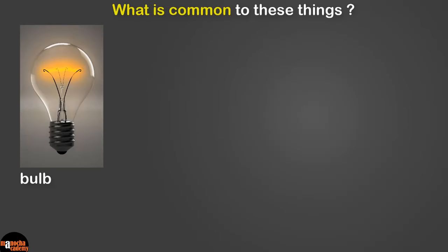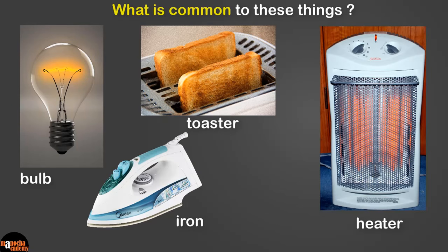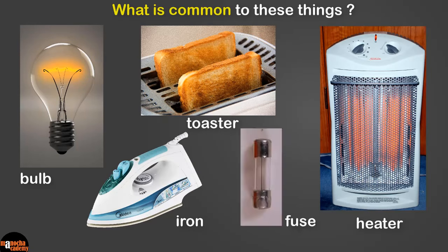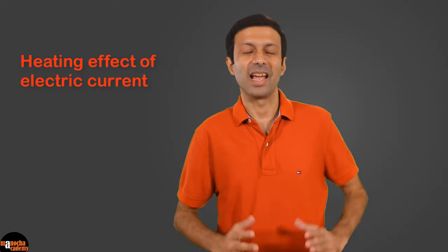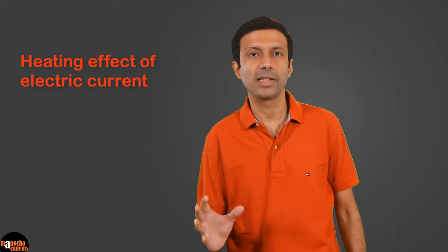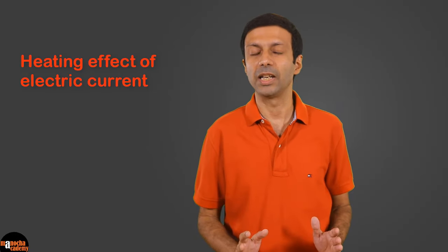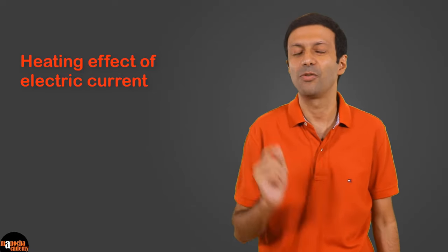Hi friends, do you know what is common to these things that you see in your everyday lives? An electric bulb, toaster, electric iron, electric heater and a simple fuse. That's right, they all work on the heating effect of electric current and it's going to be the topic of this video. We'll look at the factors affecting the amount of heat energy produced and the practical applications of the heating effect of current.